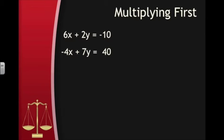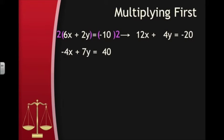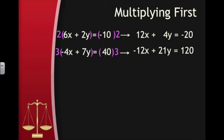4 does not go into 6, but if we look at the next multiple of 6, which is 12, we find that 4 does go into that 3 times. So 12 is the least common multiple of 6 and 4. Our goal now is to get a plus 12x in the first equation and a minus 12x in the second equation. To do this, we are going to multiply the first equation by 2 to get 12x plus 4y equals negative 20, being careful to multiply all three terms by 2. Next, we are going to multiply the second equation by 3 to get negative 12x plus 21y equals 120 — again, multiply all three terms by 3.